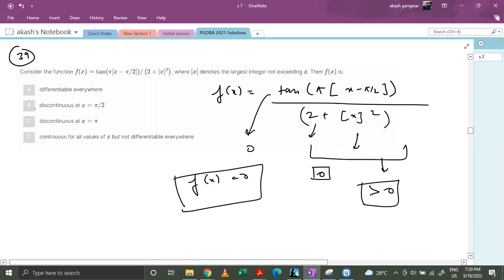f(x) equals to 0 is always differentiable everywhere. So this scary looking function was nothing but f(x) equals to 0.